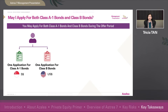We would like to highlight that you may apply for both Class A1 bonds and Class B bonds during the offer period. This means that you can make one application for Class A1 bonds and another separate application for Class B bonds, in the manner set out in the prospectus.